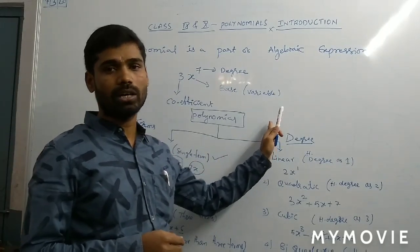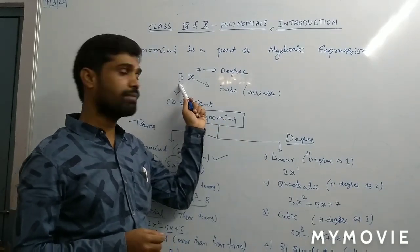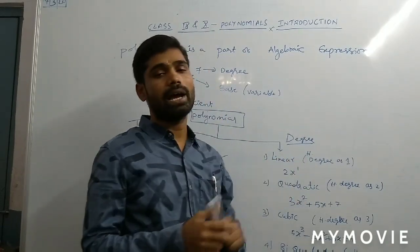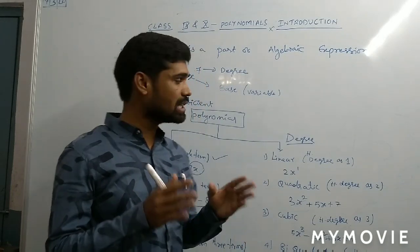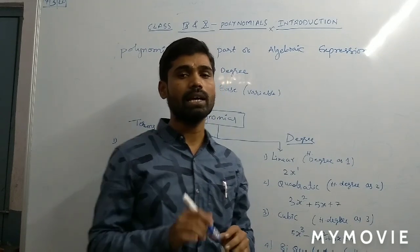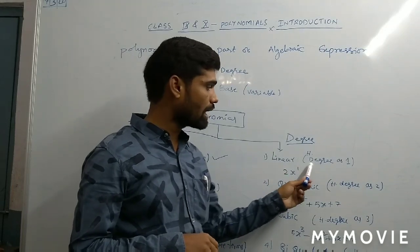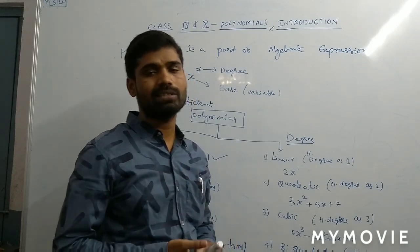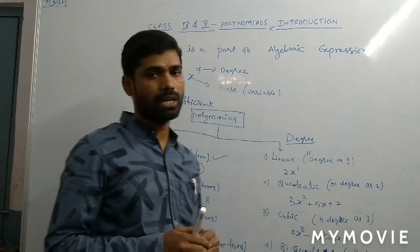Now let us observe about classification based on the degree. Degree is very important. We just saw coefficient, base, and degree. Here we have to observe the highest degree. When the highest degree is one, that is called a linear polynomial. The degree is only one, so it is called a linear polynomial. For example, 2x, 3x, or minus 5x — any one-degree term we can take.